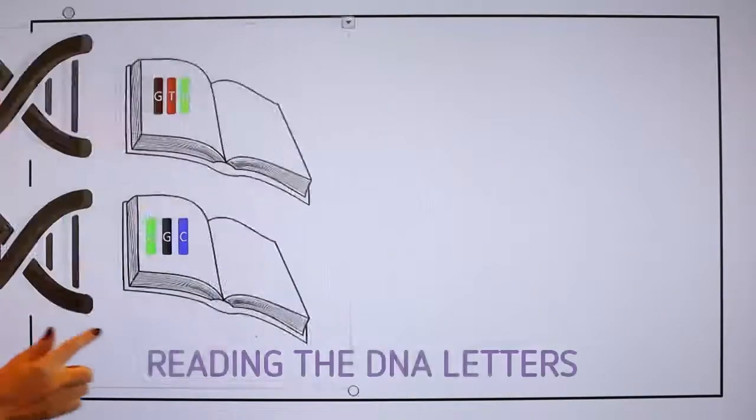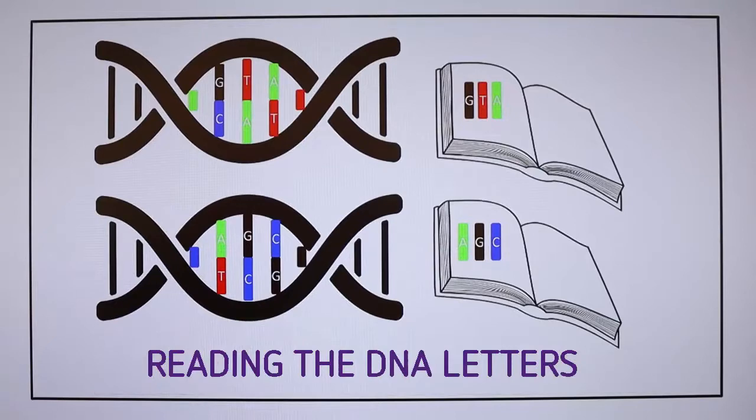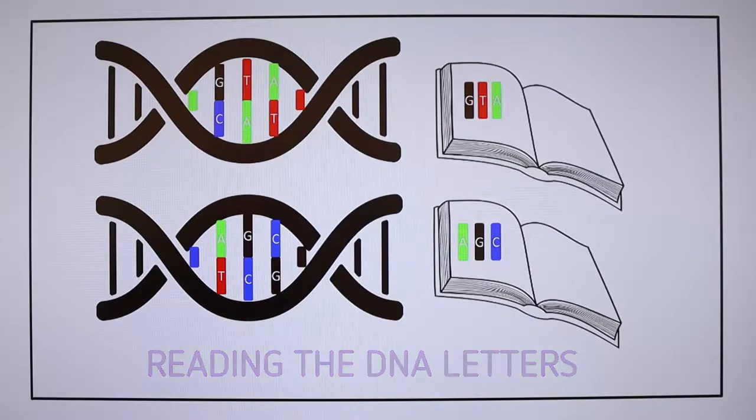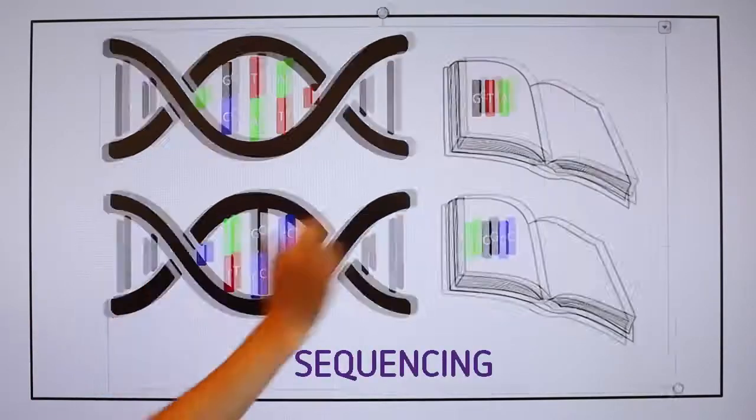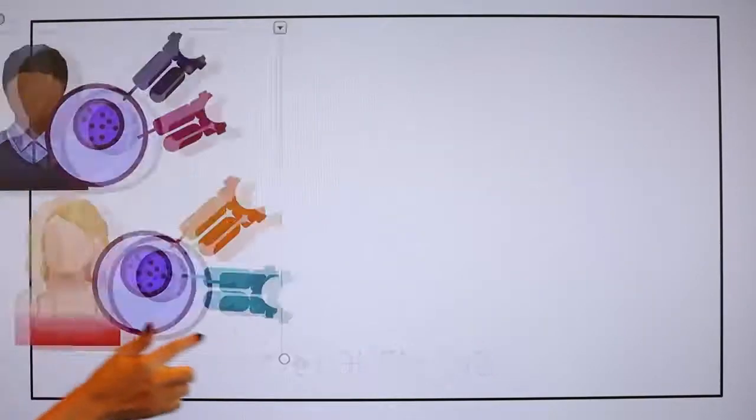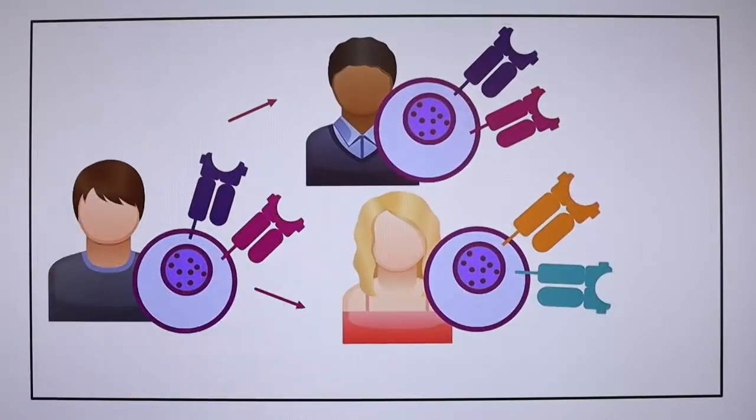By reading the DNA letters, the lab can find out the HLA color for every patient and donor. This is called sequencing. Only the people with the same HLA color are a match for transplantation.